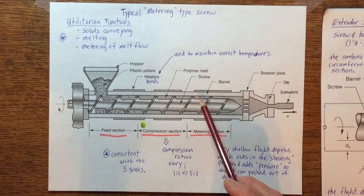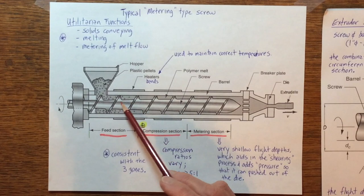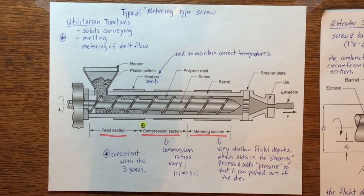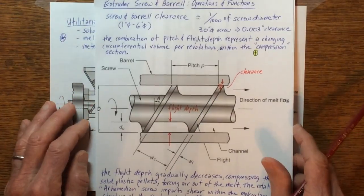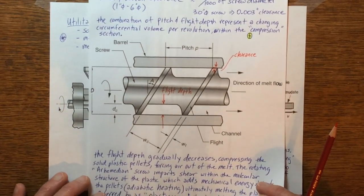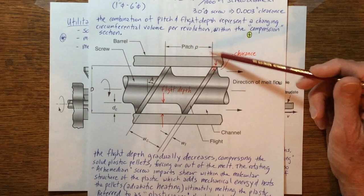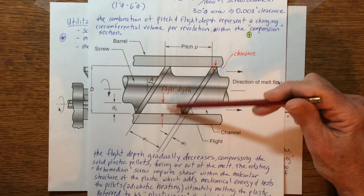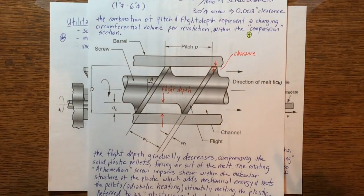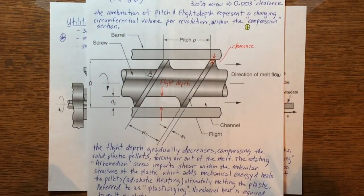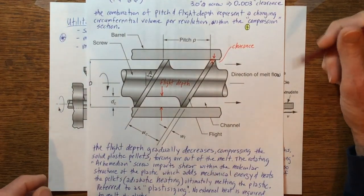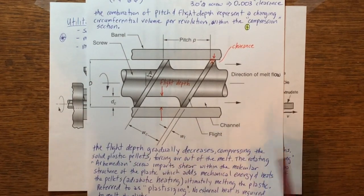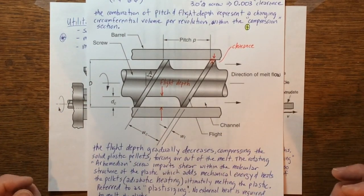At the end of this screw, this little volumetric area continues to decrease and decrease. I wanted to show that to you on this specific die. So what is taking place here as this material, these are all small little pellets, this material begins to compress, compress, compress.